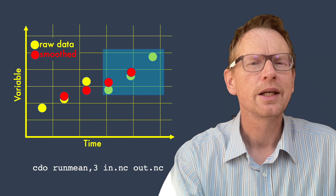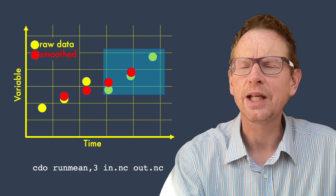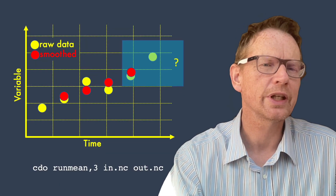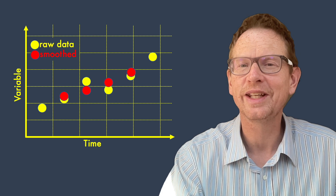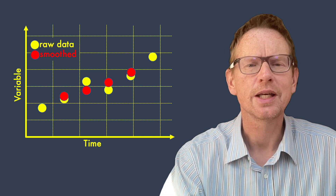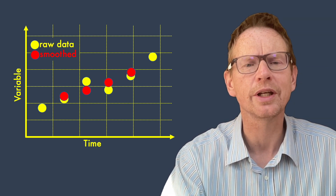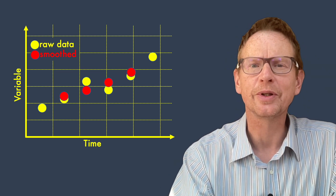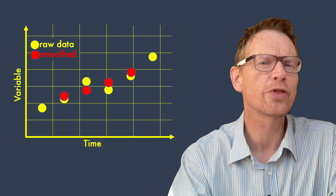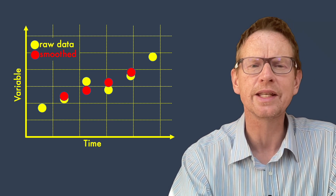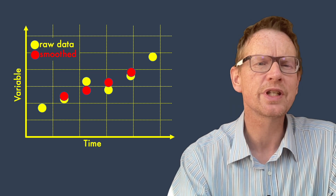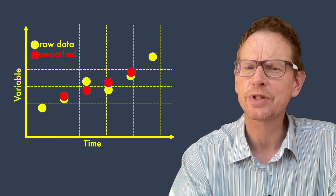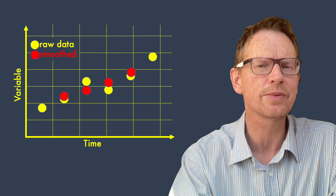But what happens next? When we want to move to the last point of the series we have a problem because there are no longer three data points in the raw series and CDO can't average them with a three-step window. We have in the original series six data points but using a running mean of three steps or three days we basically have a smooth series which is shorter — it's missing a point in the first time step and it's missing a point in the last time step.